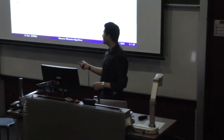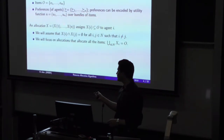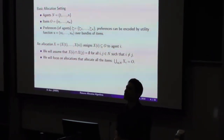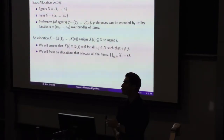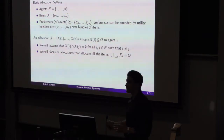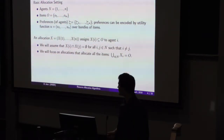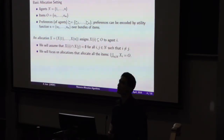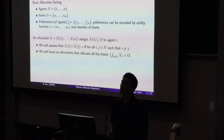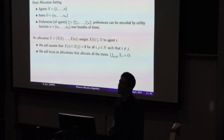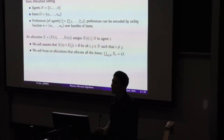An allocation X is a partitioning of the items among agents, where XI denotes the set of items given to agent I. X1 is the set given to agent 1, X2 to agent 2, and so on. Allocations must be disjoint — items are not shared — and the union of all XIs must equal the total set of items, making the partition pairwise disjoint.